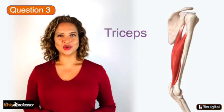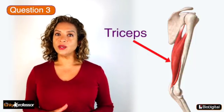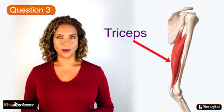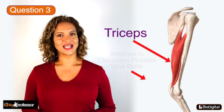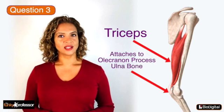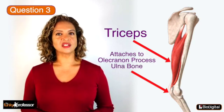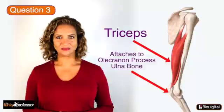The answer to question 3 is the triceps muscle, which is the only muscle to be found in the posterior compartment of the arm. It attaches to the ulnar bone — to be more precise, it attaches to the olecranon process of the ulnar bone.